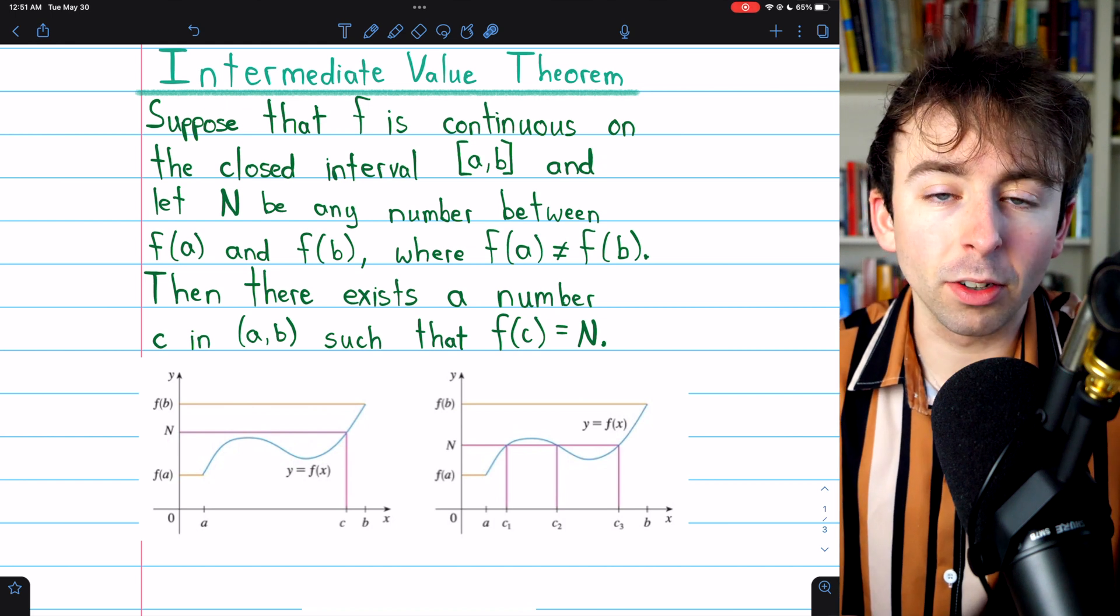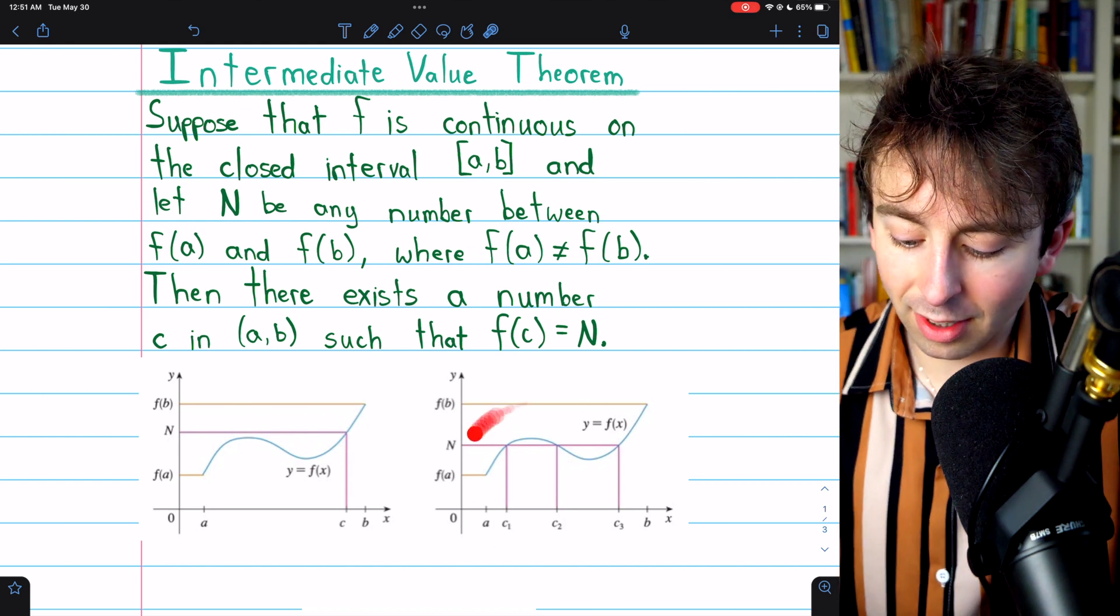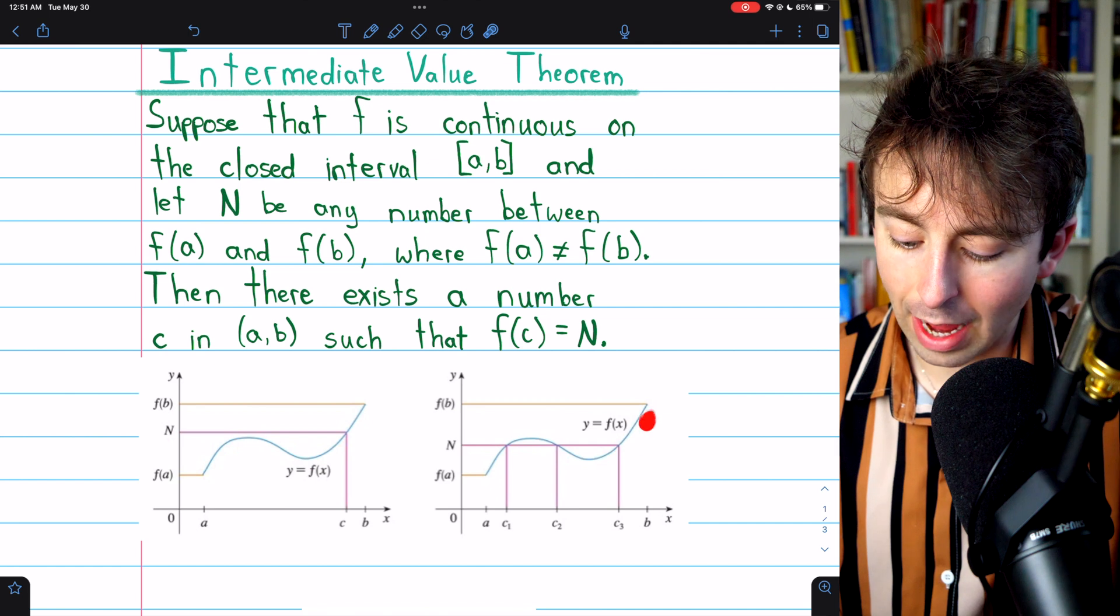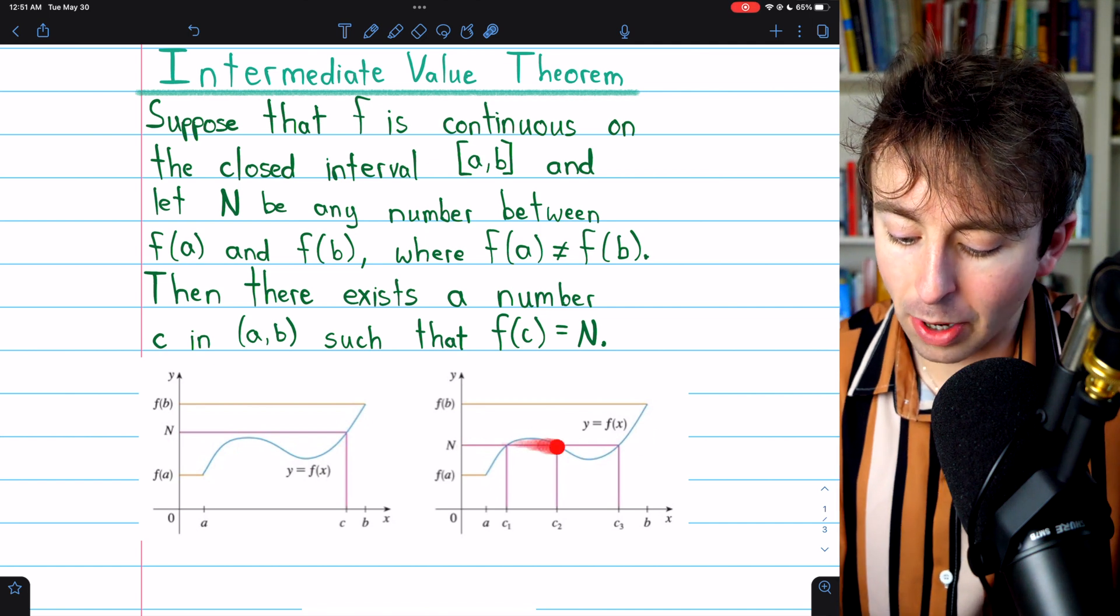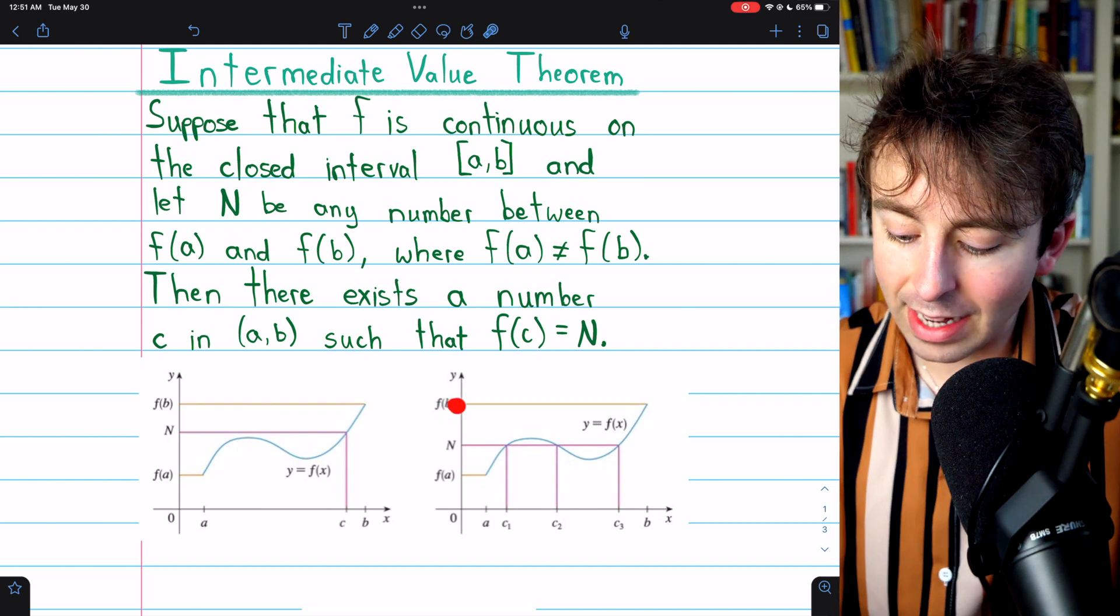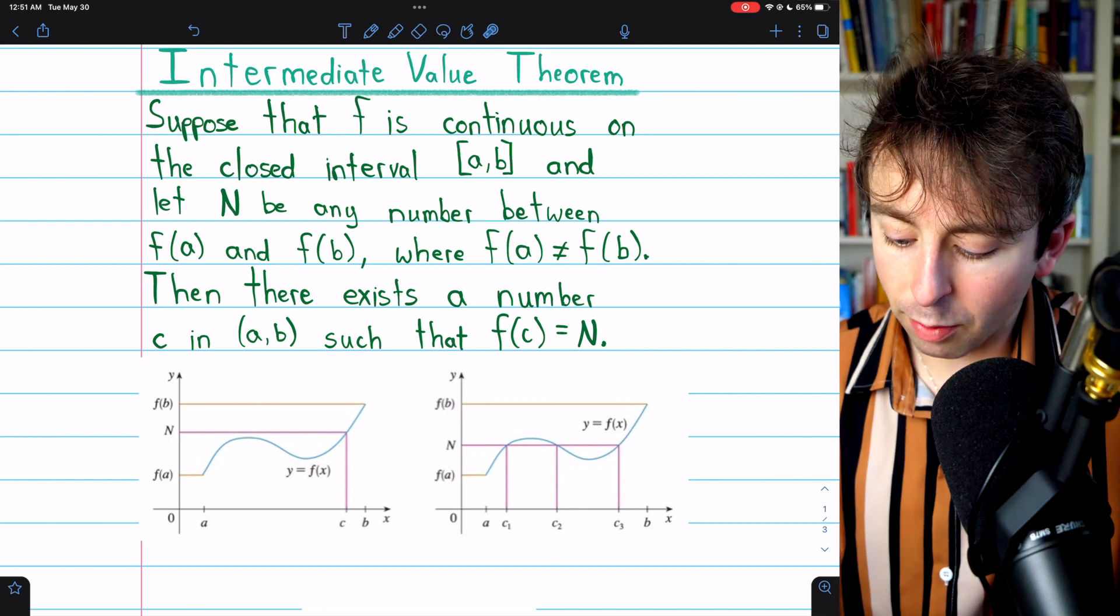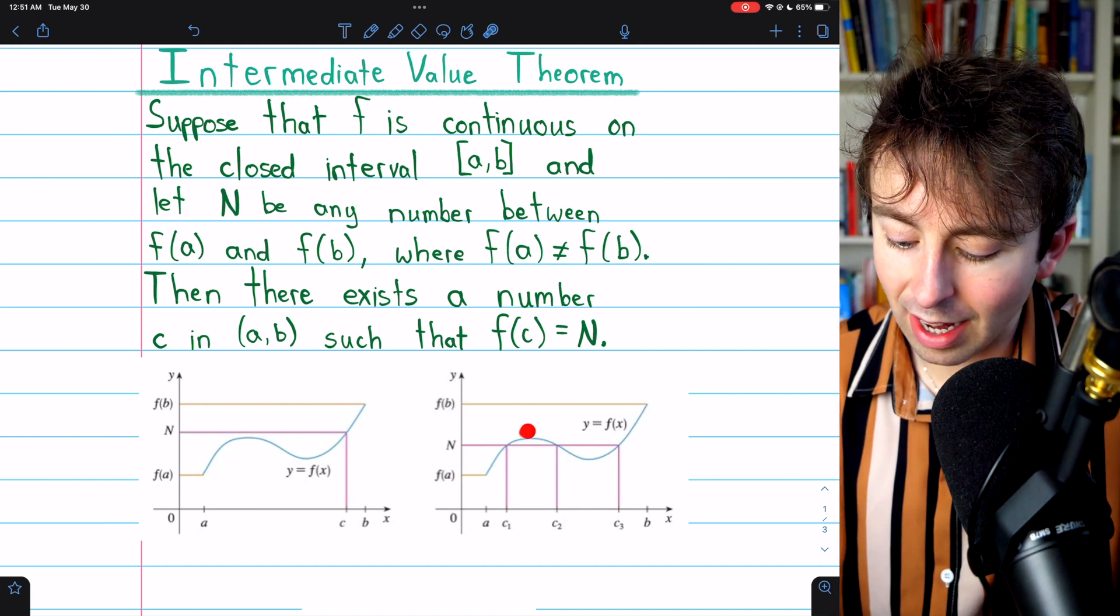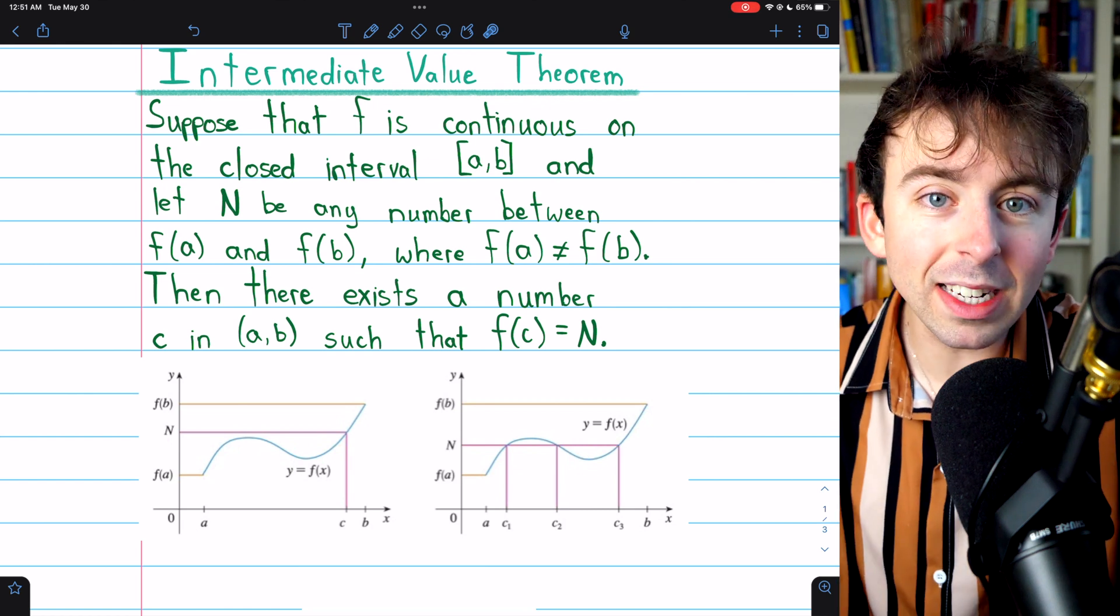Now, it could also happen that this occurs multiple times. In this example, we have a continuous function, f(x). Here's a number N that's between the starting value, f(a), and the ending value, f(b). And our function, f(x), happens to take on the value N three times.